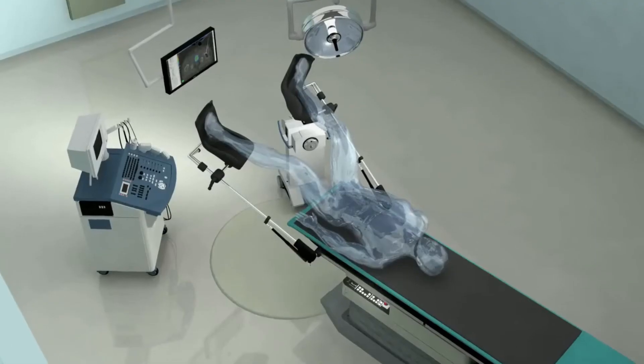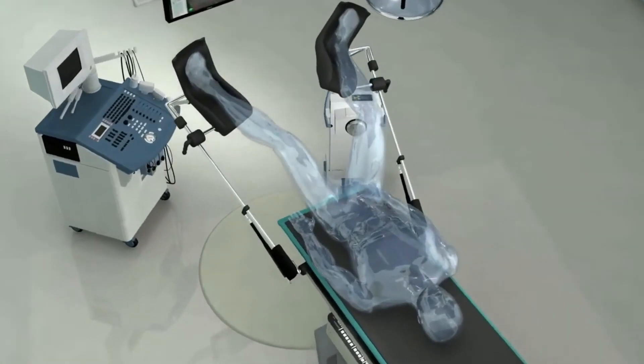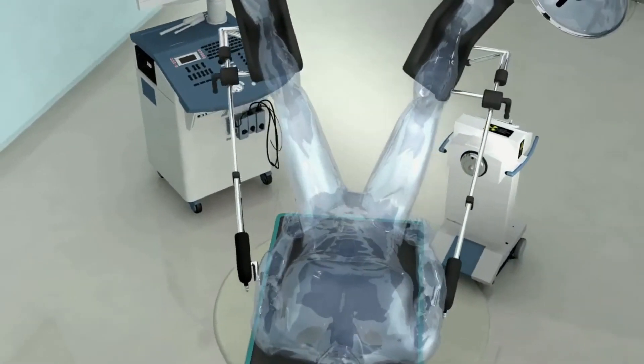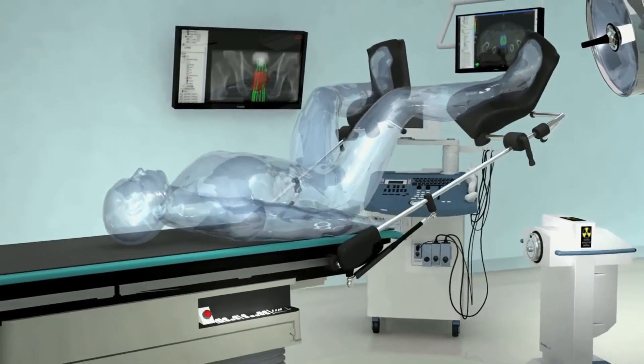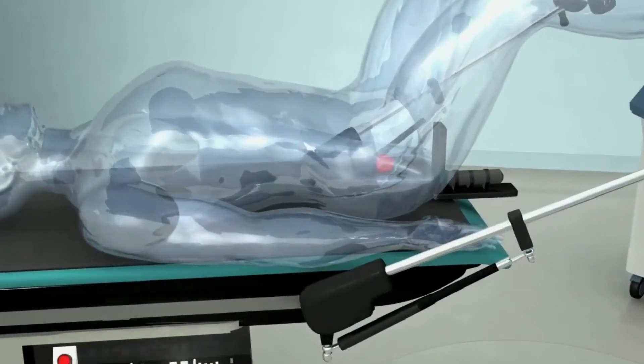High dose rate. HDR implants discharge high doses of radiation for 10 to 20 minutes. Your provider then removes the implant. Treatment times vary from twice a day for up to five days to once a week for up to five weeks.